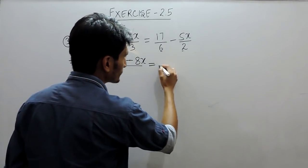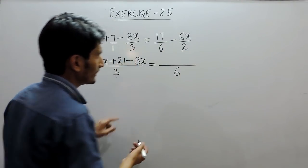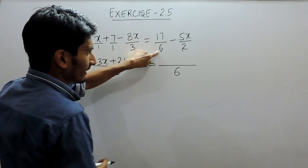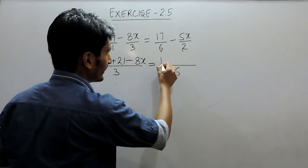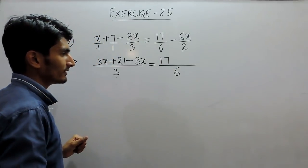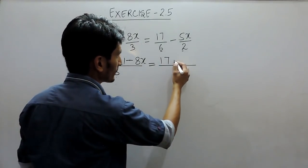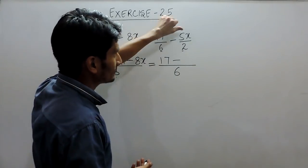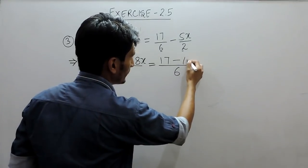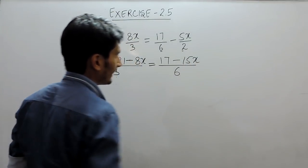In this case, LCM of 6 and 2 is 6. When 6 is divided by 6, the quotient will be 1, and when 1 is multiplied by 17, it will give 17. And when 6 is divided by 2, the quotient will be 3, and when 3 is multiplied by 5x, it will give 15x.